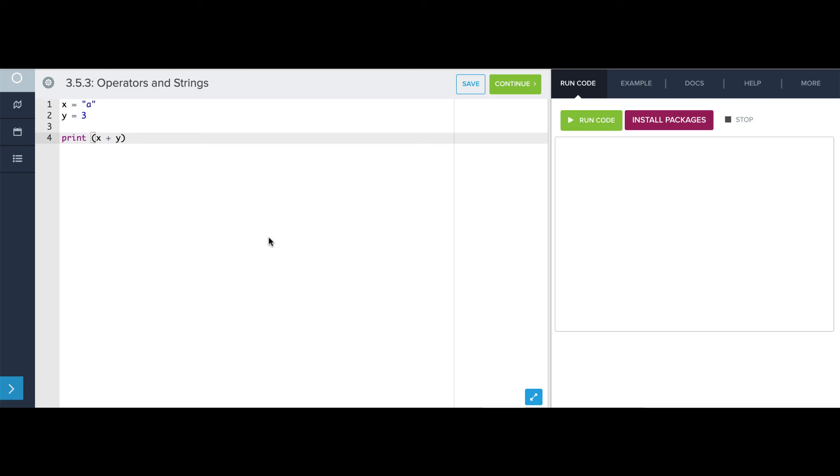Let's try to print the concatenation of the letter A and the number 3. Now if we do this, it's not going to work because you're not allowed to concatenate strings with integers. So what we need to do is change the integer, in this case Y, to a string using the str function. And there you go, A3.